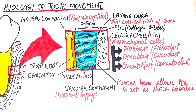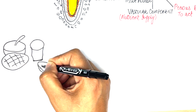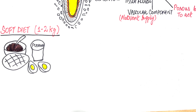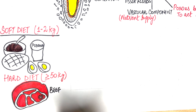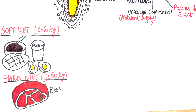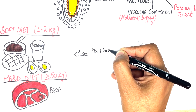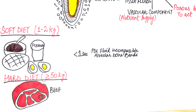The forces acting on the teeth and the PDL during mastication can range from 1 to 2 kg during a soft diet to about 50 kg and over while chewing on a hard object. When a tooth is subjected to sudden heavy loads of short duration, quick displacement of the tooth into the socket is prevented by the incompressible tissue fluids, hence the force is transmitted to the alveolar bone, causing bending of the alveolar bone. This phenomenon occurs when the duration of the heavy force is less than 1 second.